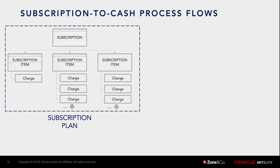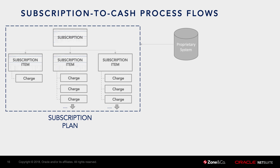Now that the subscription plan is set up, we're ready to start billing. But before billing, particularly for variable or consumption-based billing, we need to bring in that consumption and map it against the subscription plans. The most common use case is that usage is stored in an external or proprietary system. There are a number of ways to bring that in — the most common is through an API integration. Zone Advanced Billing has an API wrapper so you can automatically feed usage records, or even create subscriptions and subscription items. Alternatively, many customers use a CSV export and import process.